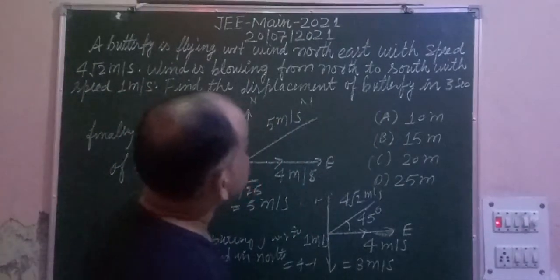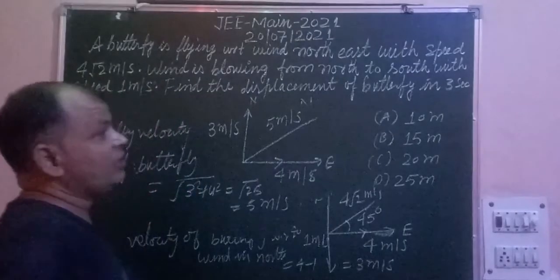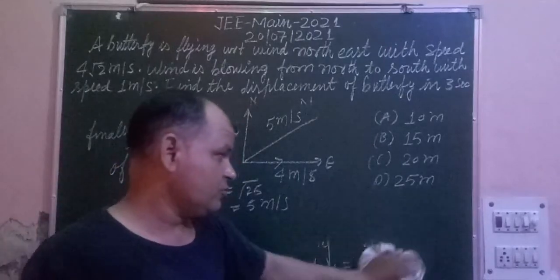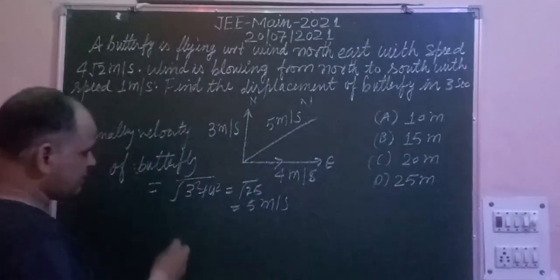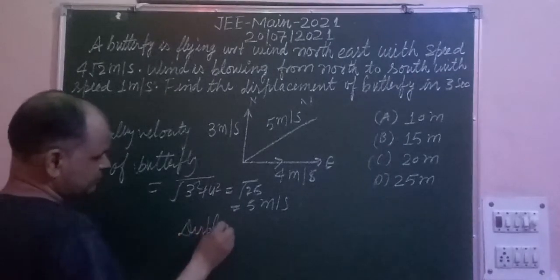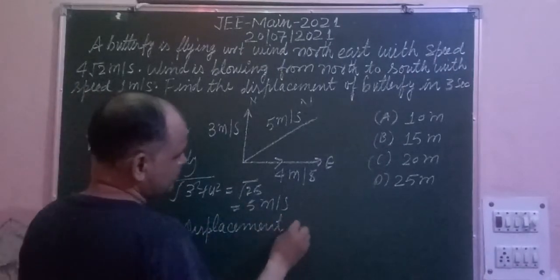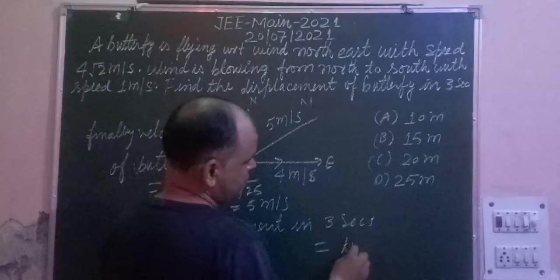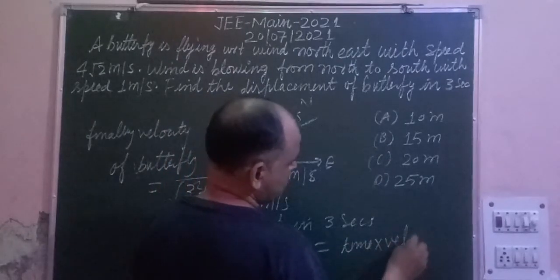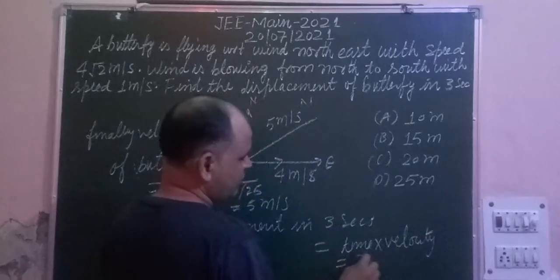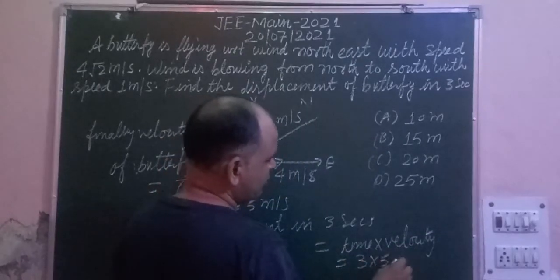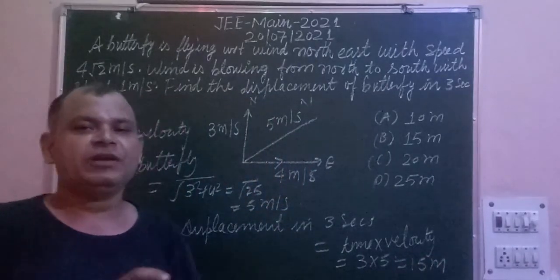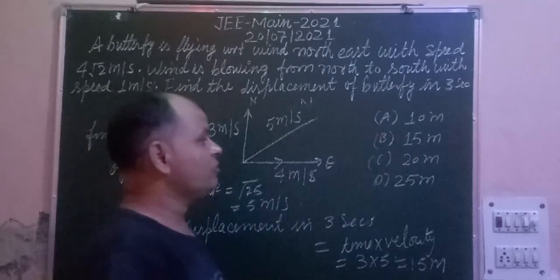The question asks for the displacement of the butterfly in 3 seconds. The real velocity of the butterfly is 5 meters per second. Therefore, displacement in 3 seconds equals time × velocity = 3 × 5 = 15 meters. So the displacement of the butterfly in 3 seconds is 15 meters, which is found in option B.